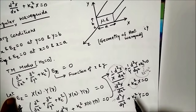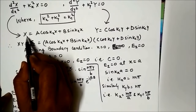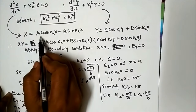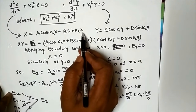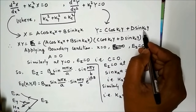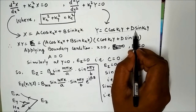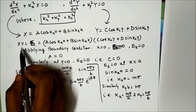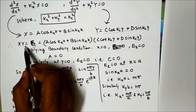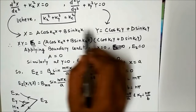Solving the first differential equation gives X = A·cos(Kx·x) + B·sin(Kx·x). Similarly, the second differential equation gives Y = C·cos(Ky·y) + D·sin(Ky·y). Constants A, B, C, D are found using boundary conditions. We combine these to get Ez = X·Y.